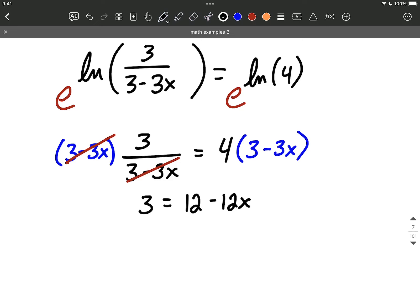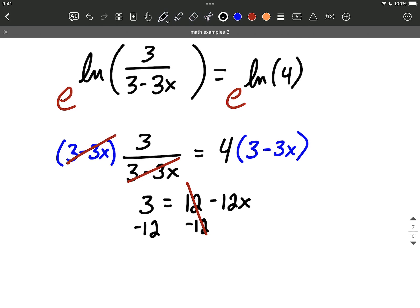Since all the x's are on the right-hand side, my next step is going to be moving this 12 to the other side by subtracting it. 12 minus 12 makes 0. And on the left-hand side, we'll have 3 minus 12 makes negative 9.